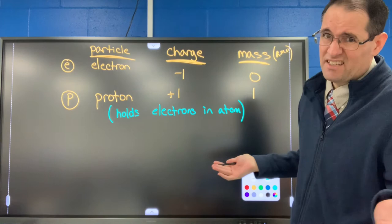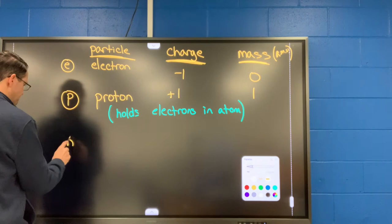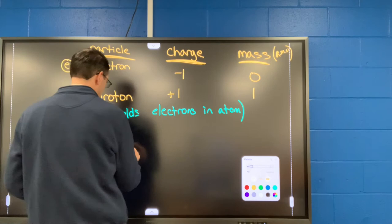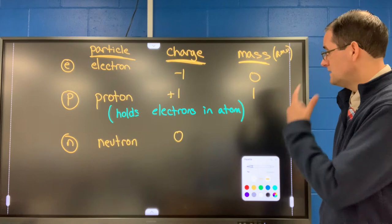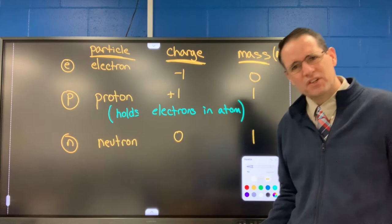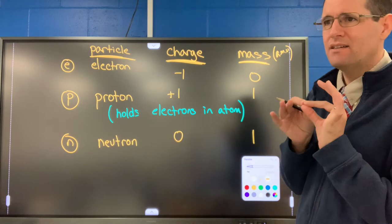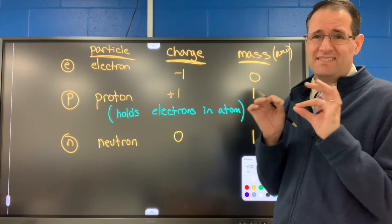The next particle is the neutron, symbol 'n', charge of zero, mass of one atomic mass unit. The purpose of the neutron is to act as nuclear glue — all those protons are crammed into a really small nucleus, and the neutron holds the protons together using something called the nuclear strong force.